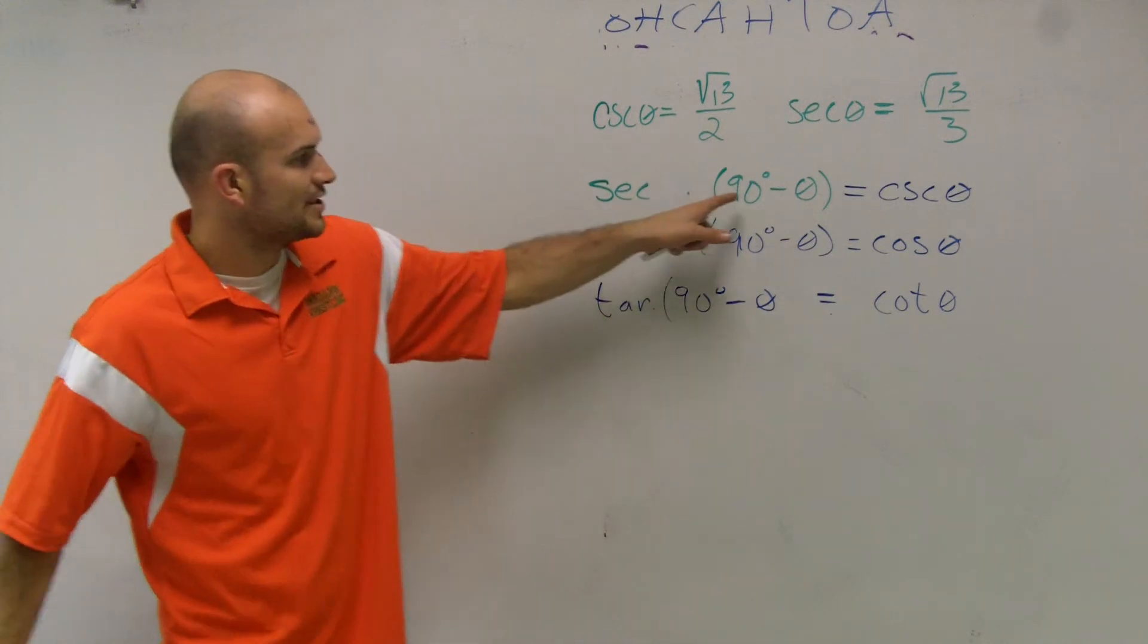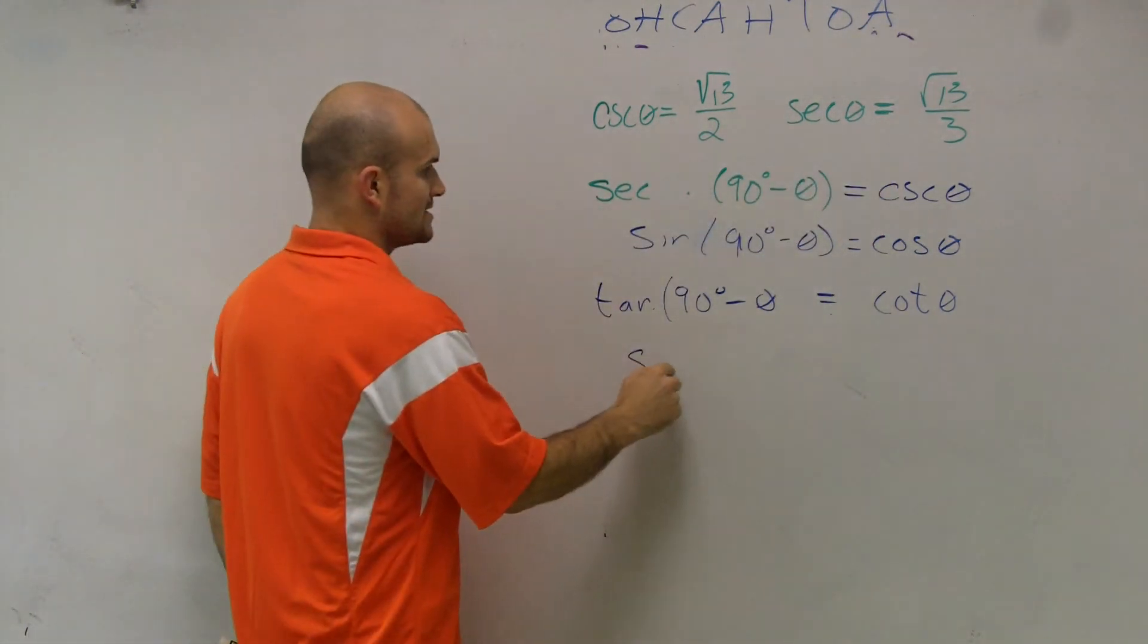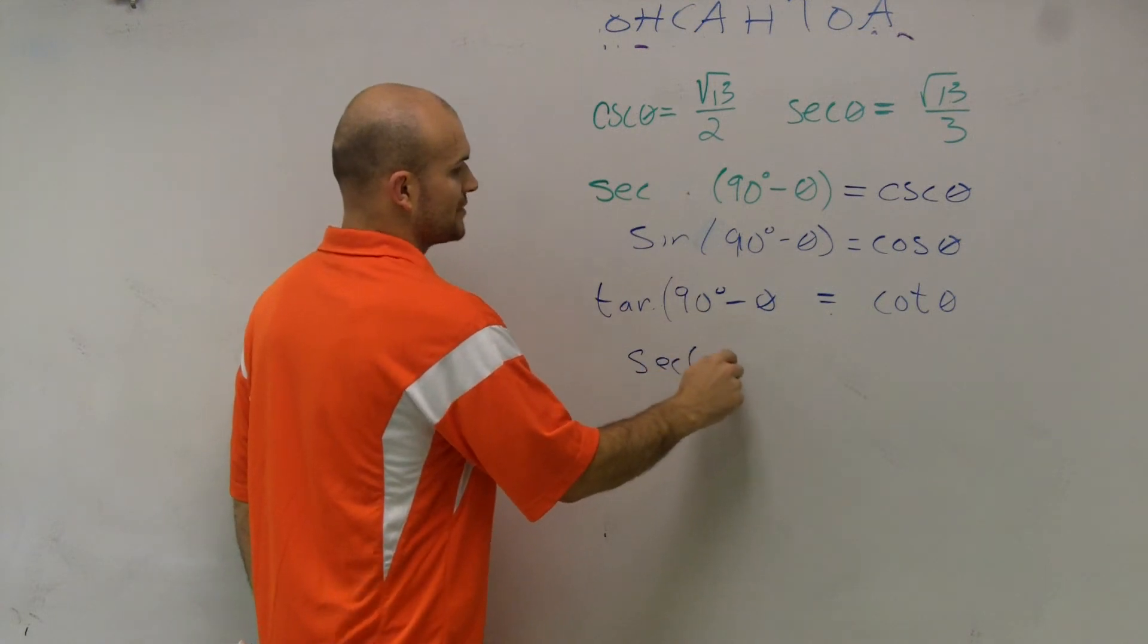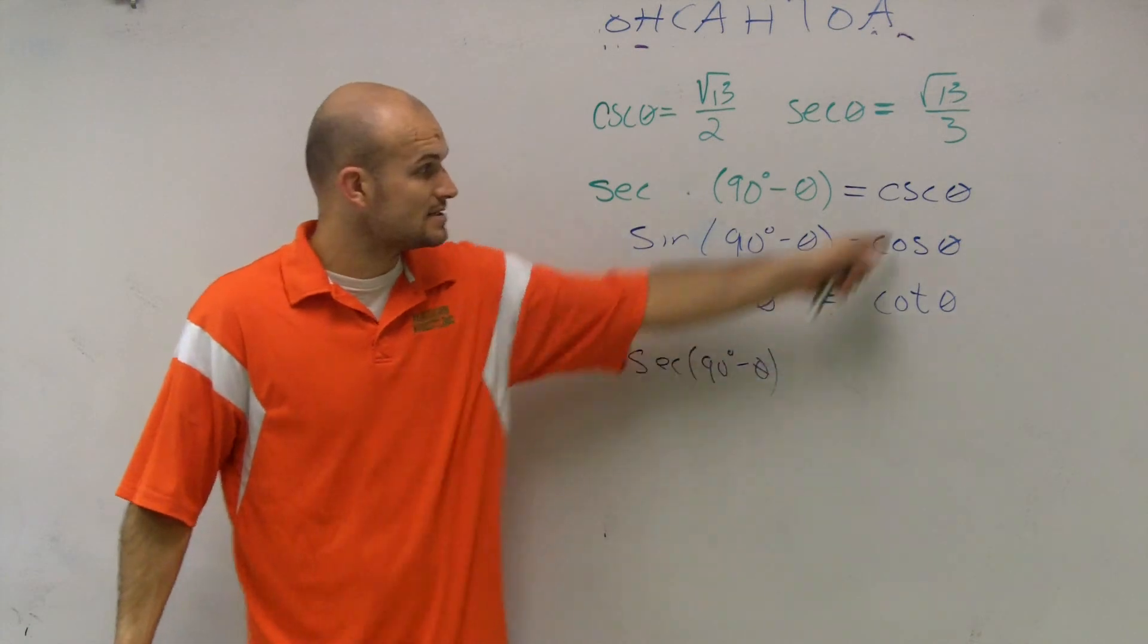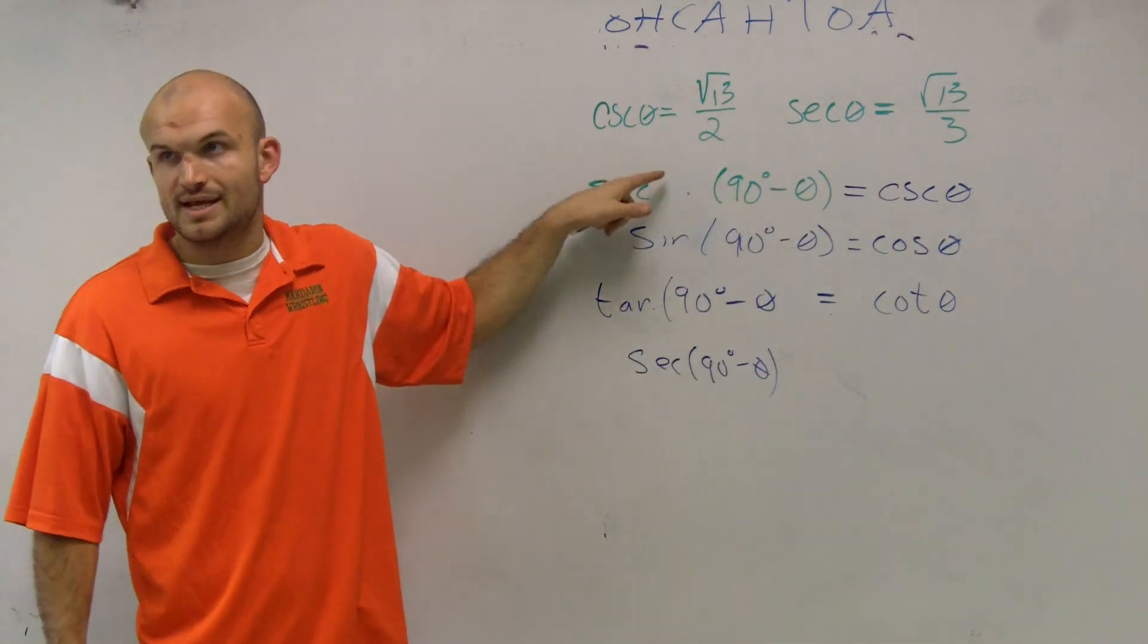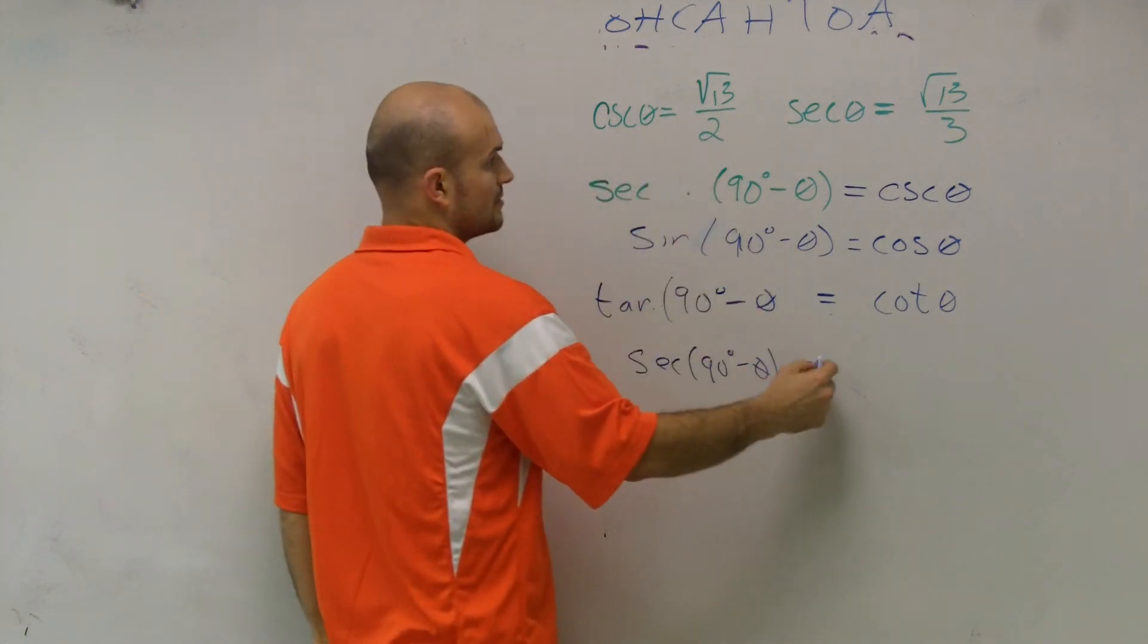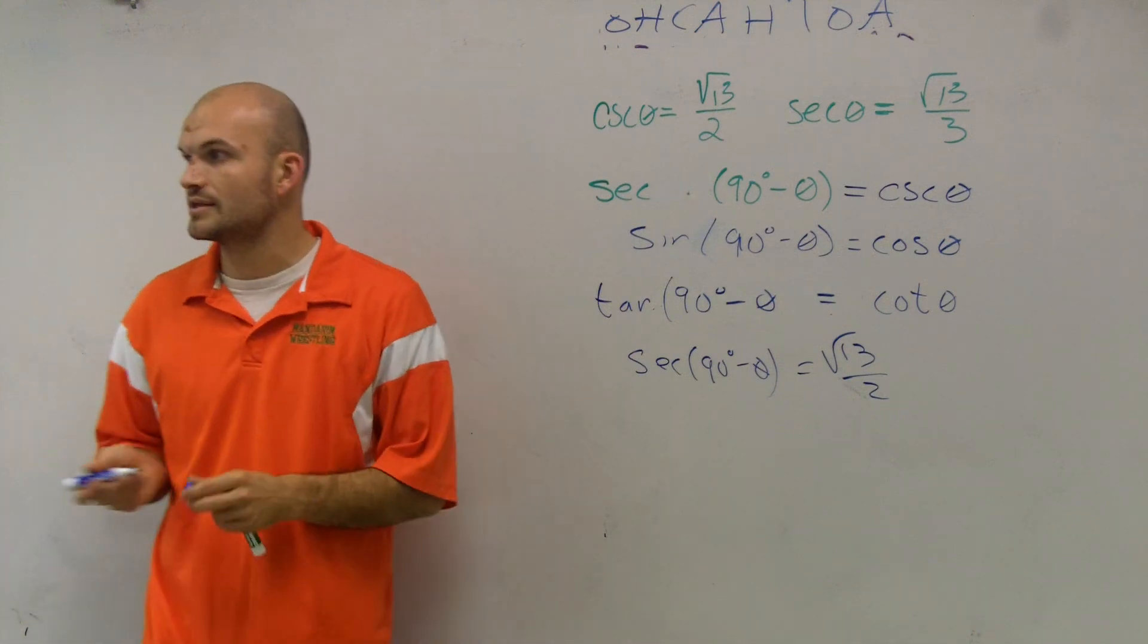So secant of 90 degrees minus theta equals cosecant of theta. What they ask is, what is secant of 90 degrees minus theta? From our co-function identities, that equals cosecant of theta. In the problem, they gave us cosecant of theta as square root of 13 over 2. That's the final answer.